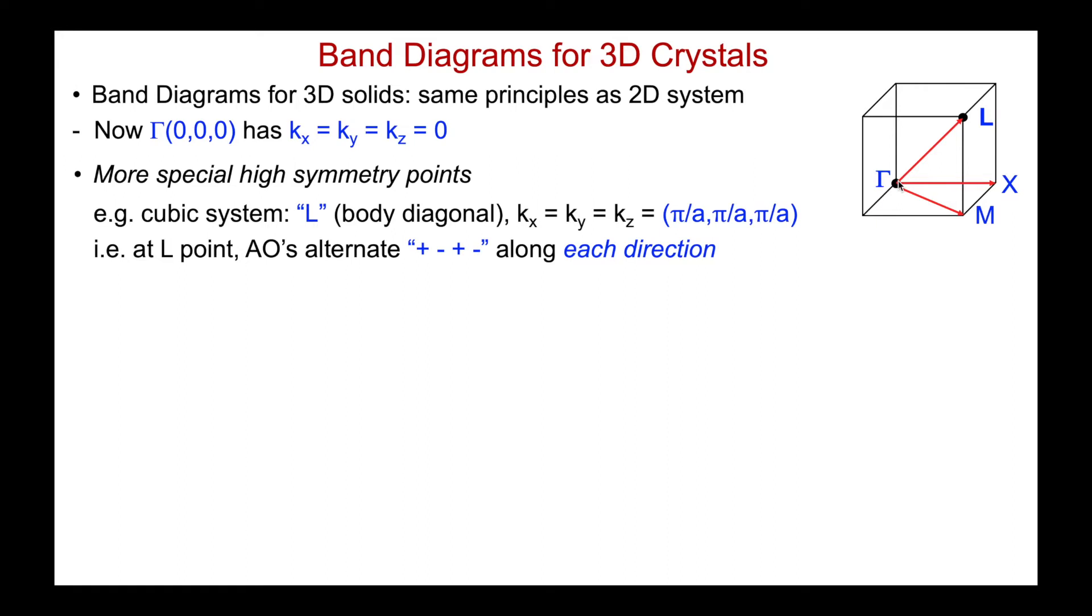But there's more special high symmetry points, right? For our 2D system we just looked along going along an edge of the square and along a diagonal. As soon as I get to, for example, a cubic system, now a key direction is what's going on with the crystal orbitals as I go along that body diagonal of the cube, from the gamma point to the so-called L point. Hopefully we could say what the L point is, because we know with all of these letters they're corresponding to where at least one of my vectors, one of my direct k vectors is pi over a. At the L point they're all equal to pi over a. The sines of the atomic orbitals are alternating plus minus plus minus along x, along y, and along z. And so now we'll go back to what I showed at the very beginning of this whole series of videos on bonds to bands. Let's go back to some of those examples of 3D band diagrams to see if we can make a little bit more sense of them.